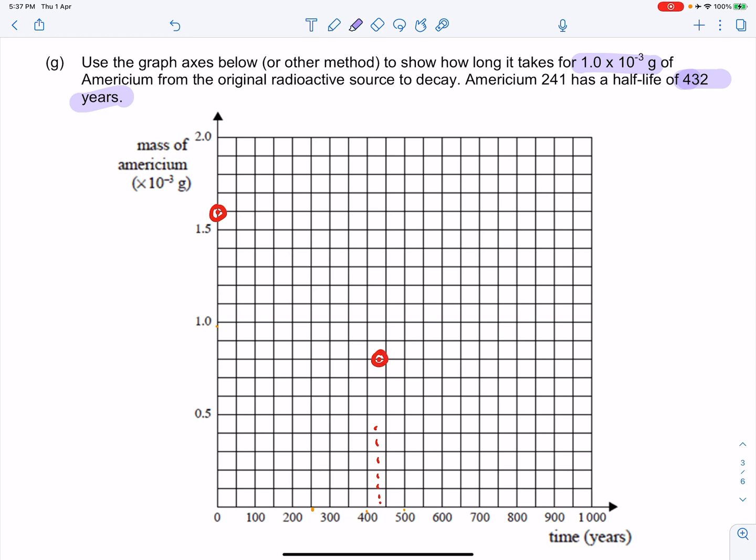I'll just erase this bit. Half of 0.8 is 0.4, and 432 plus 432 years—two half-lives—is 864 years.